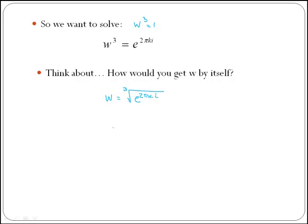But remember, any root can be written as a power. Therefore, the cubic root of e to the power of 2 phi k i is the same as e to the power of 2 phi k i, everything to the power of 1 third. And this is the same as w is equal to e to the power of 2 phi k over 3 i.